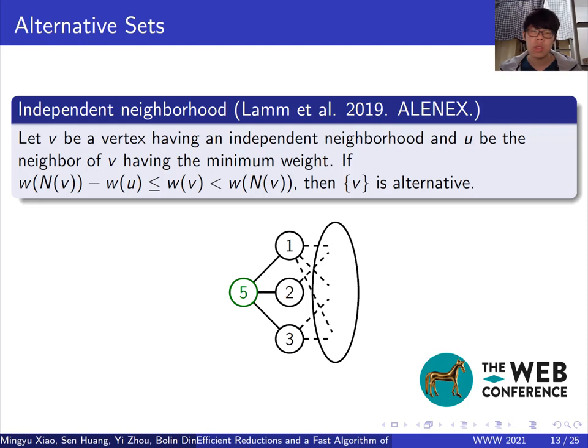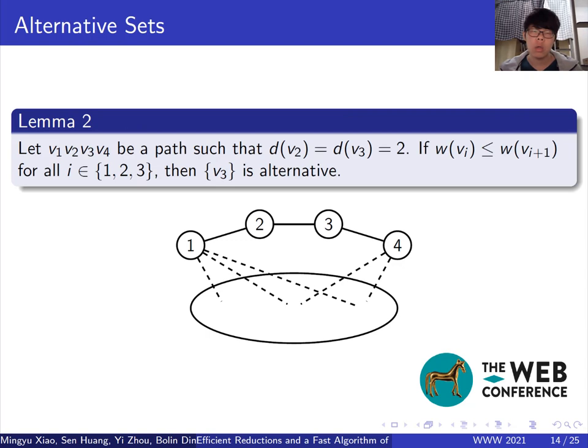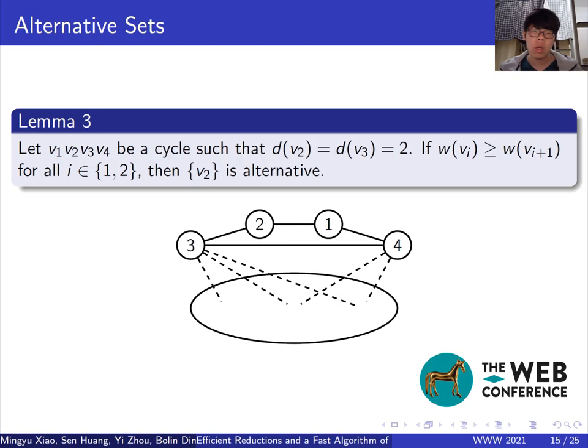Besides, we have other two cases that deal with degree 2 vertices. A degree 2 vertex in a 3-path is said to be alternative if it satisfies the conditions in Lemma 2. And if it's in a circle and satisfies the condition in Lemma 3, it's also alternative.